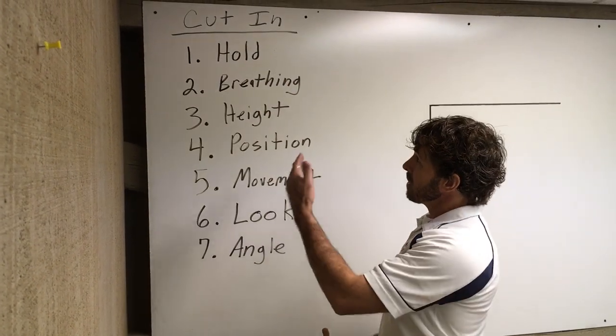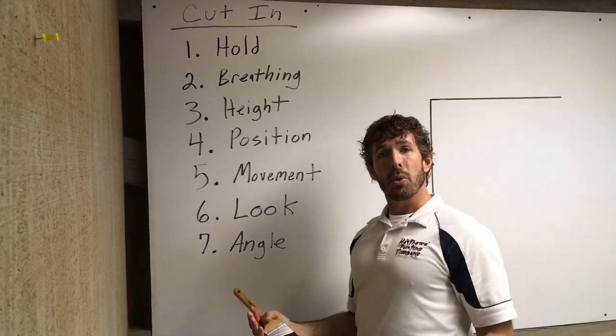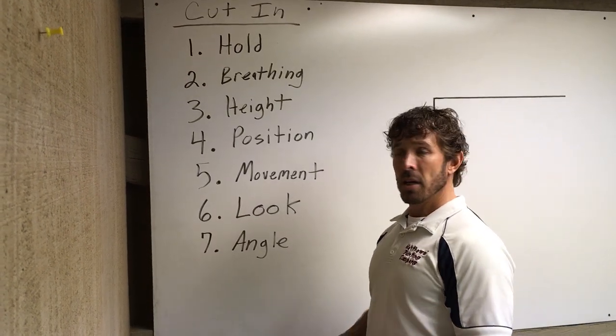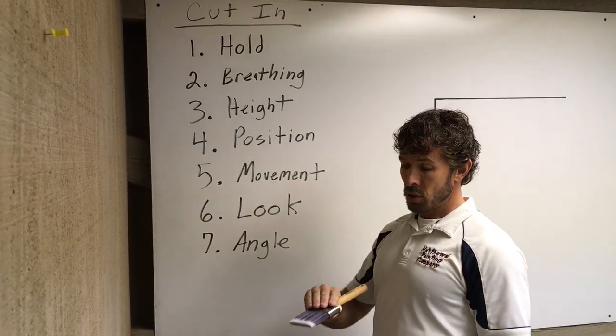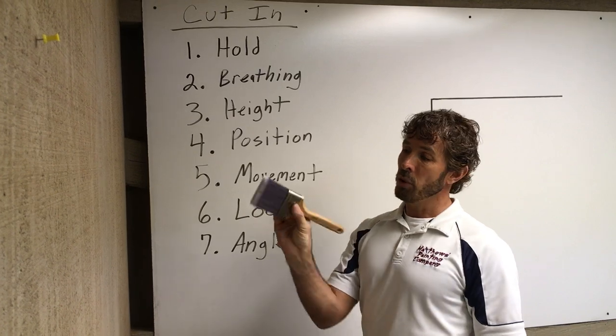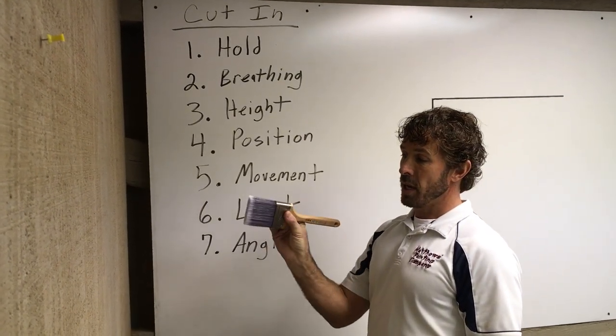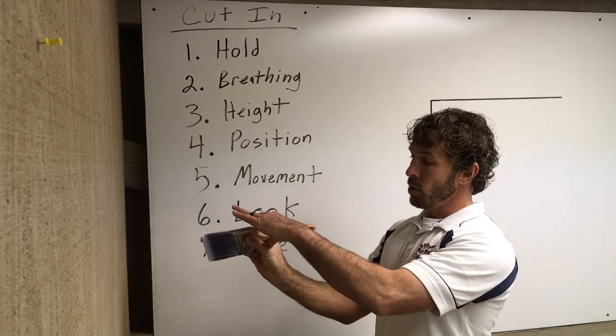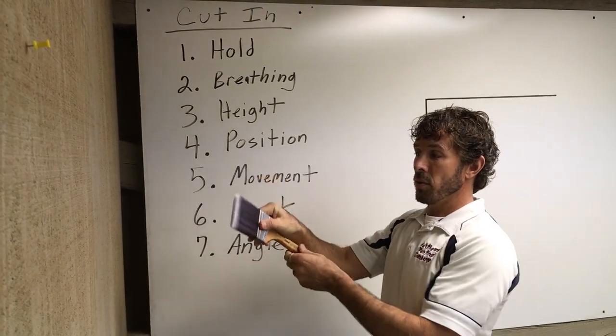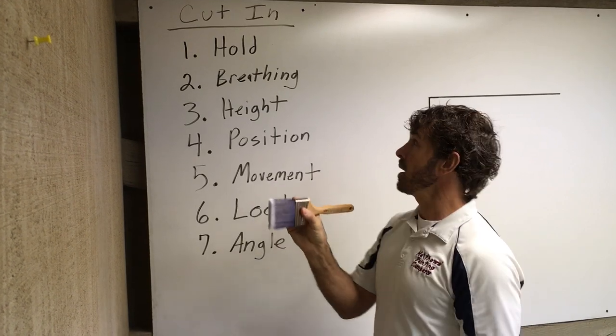There are seven basic things we like to teach, and some of these will not be as important as you become more experienced. But our first one is how you hold a brush. We simply hold the brush at the rim on the metal with four fingers on one side and a thumb on the other, with the handle on top, not underneath you.